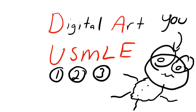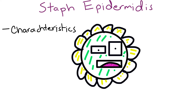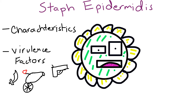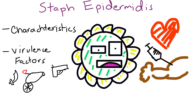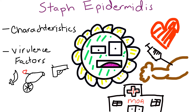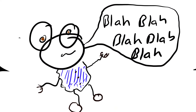Welcome to Digital Arts USMLE. Today we're going to cover some more microbiology, specifically Staphylococcus epidermidis — its characteristics, virulence factors, the organ systems affected by it, and the treatment options based on the type of infection. And while we're at it, we can go over some of the mechanisms of action that the antibiotics have.